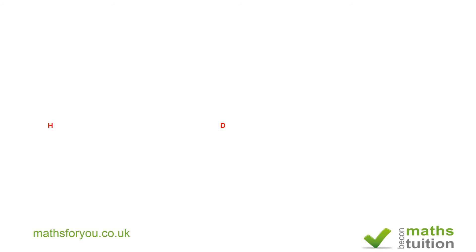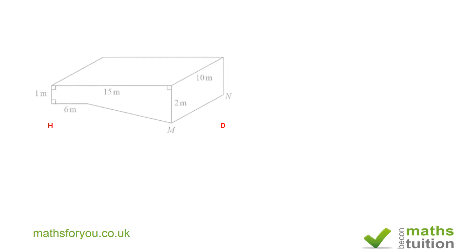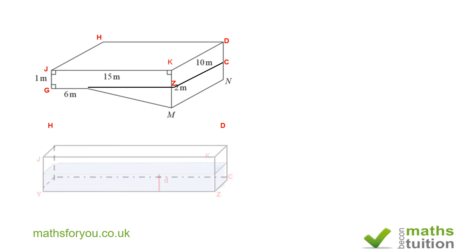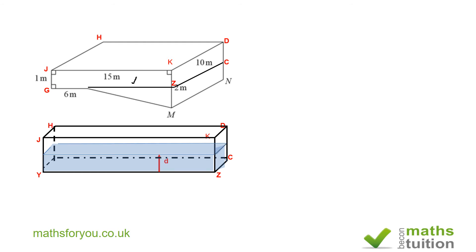In this slide we look at Section A, which is a cuboid. Labelling all the points, that's Section A from the first slide. The volume of water in the cuboid when the depth is d is V equals 15 times 10 times d, where 10 is the width of the swimming pool and 15 is the length of the cuboid. Differentiating both sides gives dV/dt equals 150 times dd/dt.